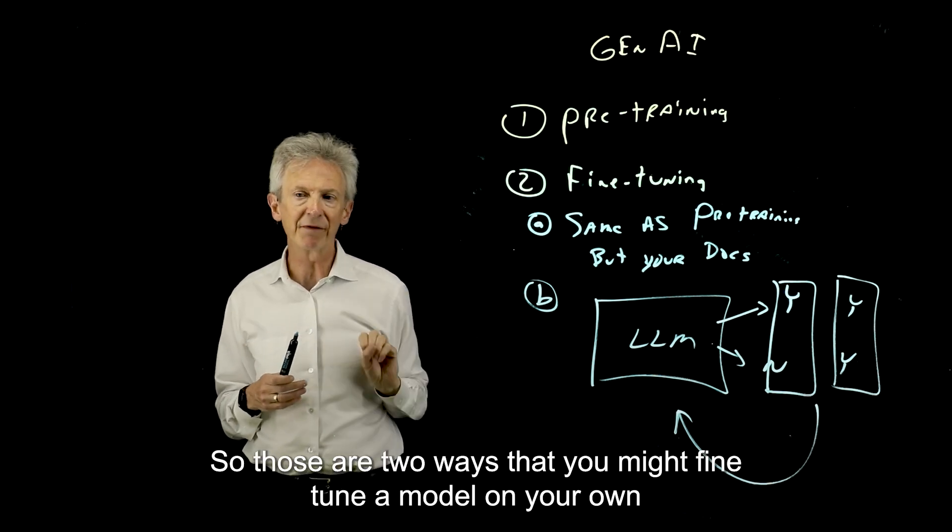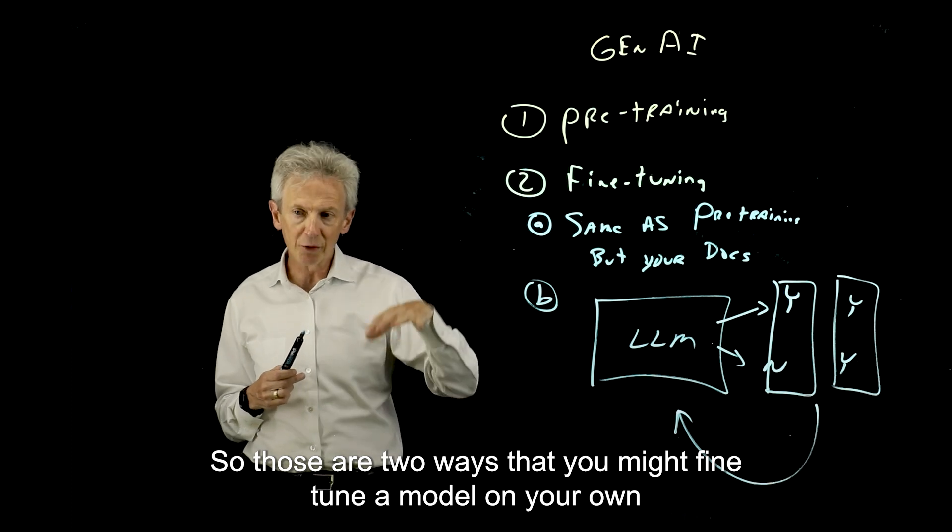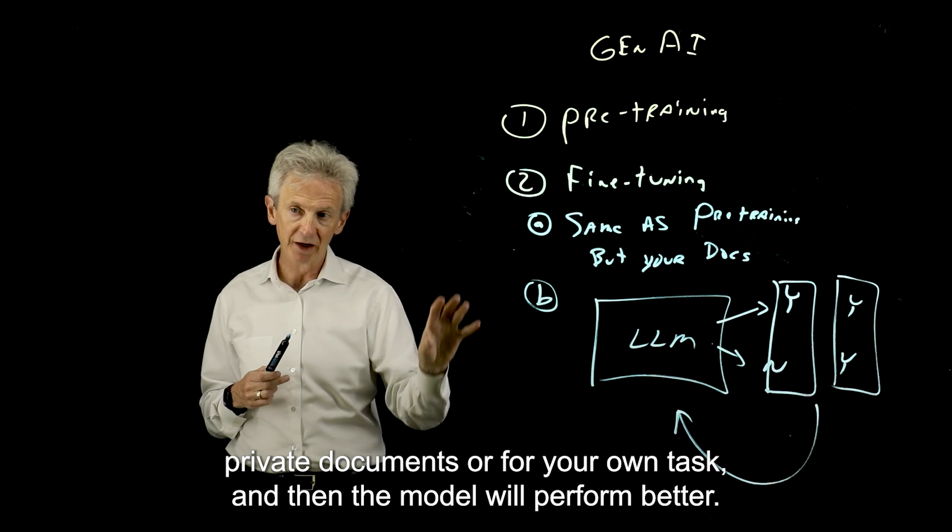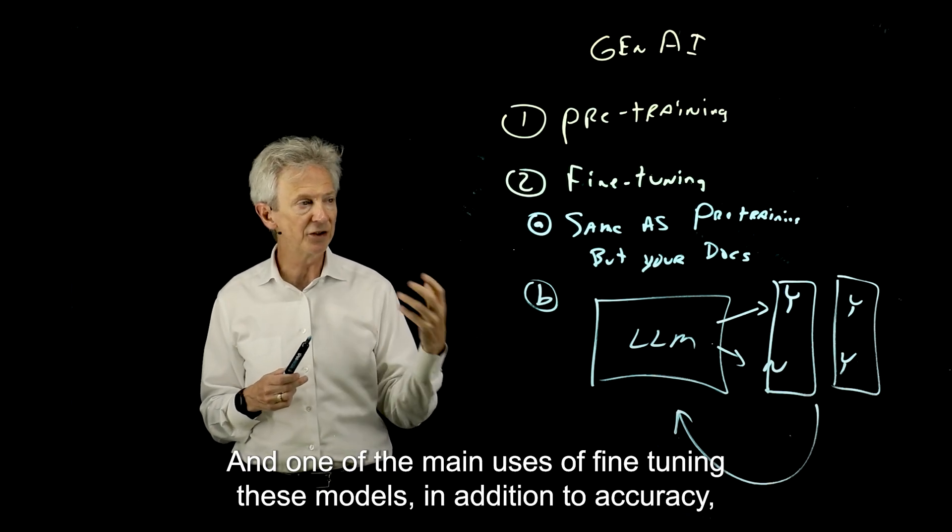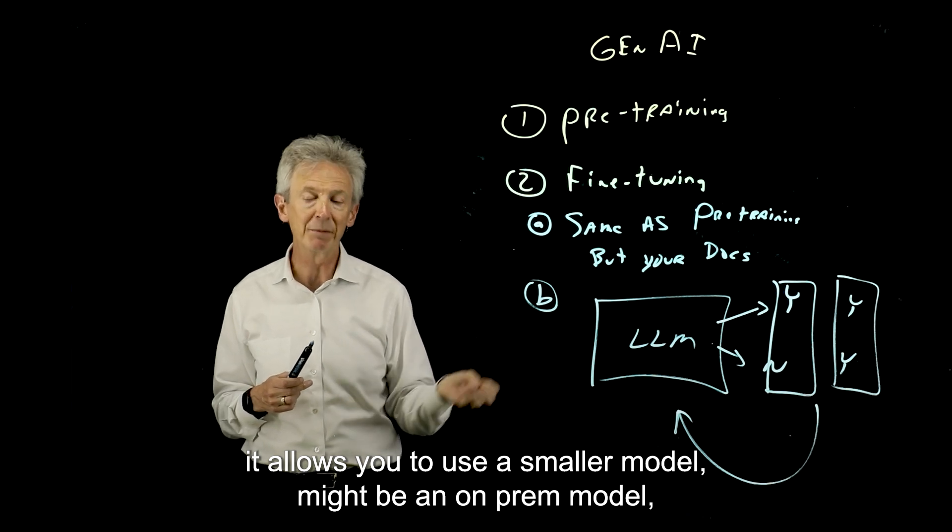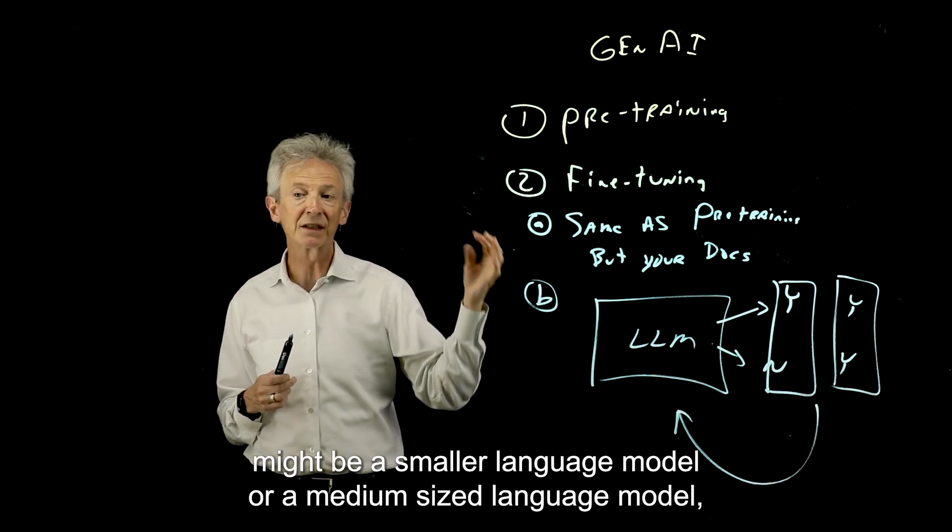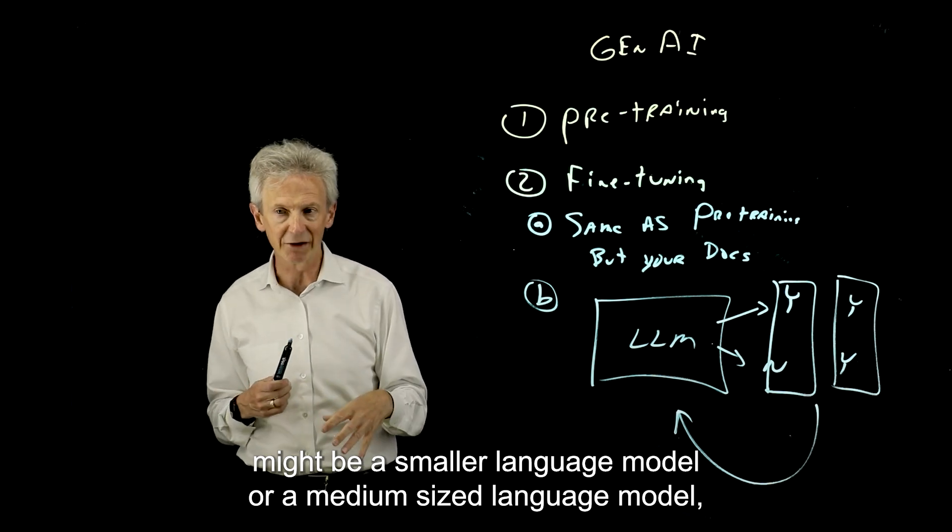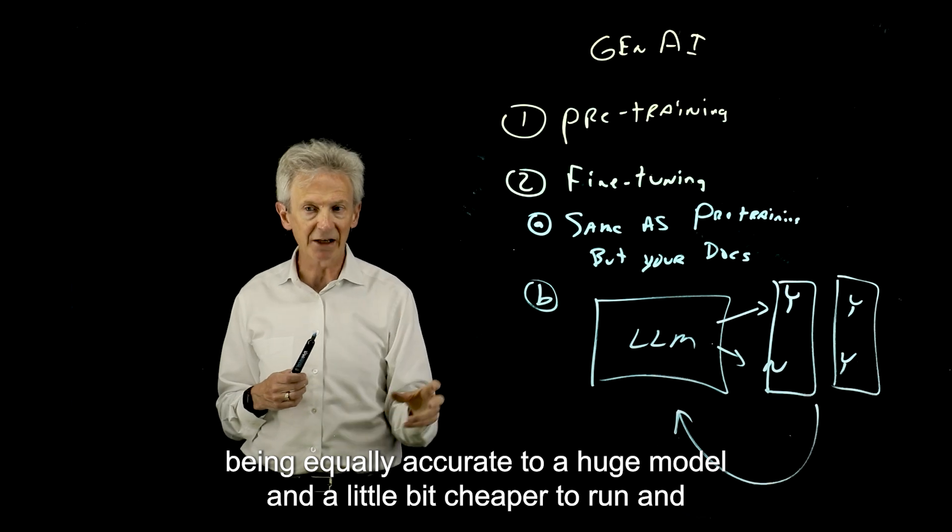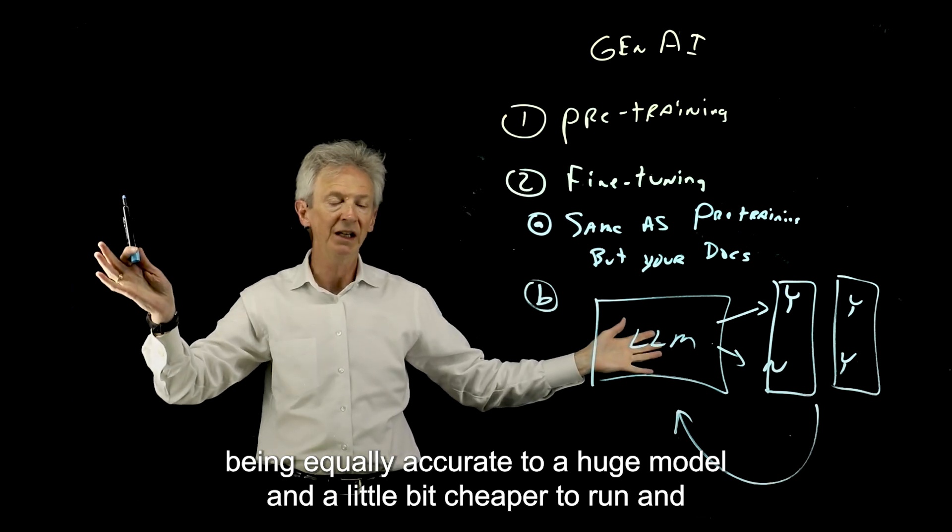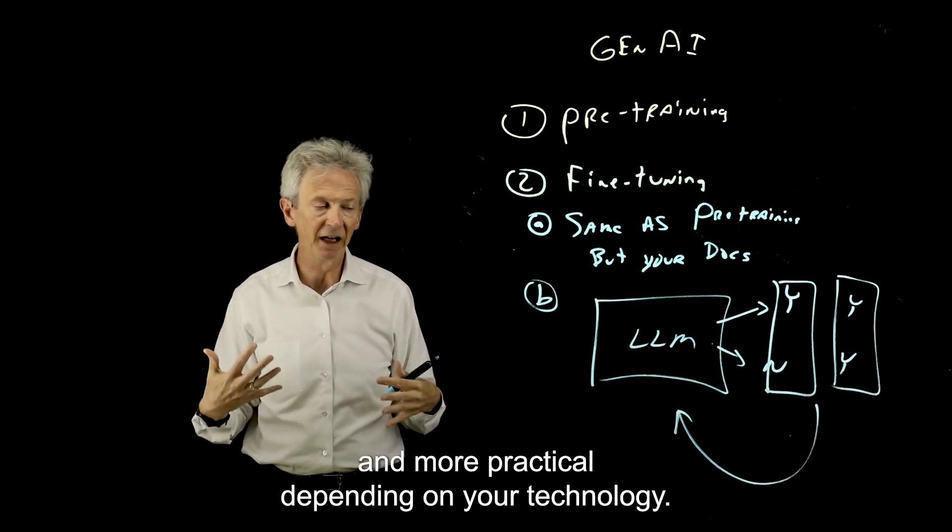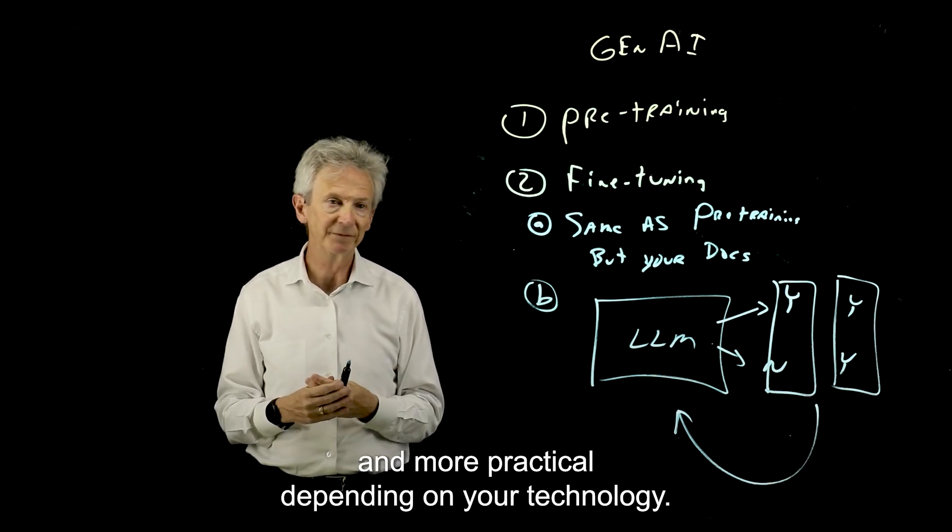So those are the two ways that you might fine-tune a model on your own private documents or for your own task. And then the model will perform better. One of the main uses of fine-tuning these models, in addition to accuracy, it allows you to use a smaller model. It might be an on-prem model, might be a smaller language model or a medium-sized language model, but it's fine-tuned on your stuff and that might end up being equally accurate to a huge model and a little bit cheaper to run and more practical depending on your technology.